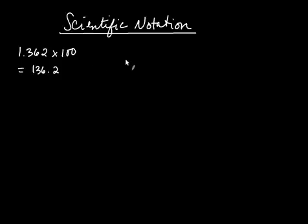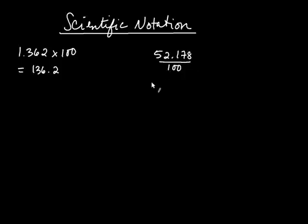Something similar happens when you don't multiply by 100, but if you divide by 100. So if you take, for example, 52.178 and you divide it by 100, the effect is that the decimal moves two places not to the right, but to the left. So the decimal moves two places to the left to get 0.52178.